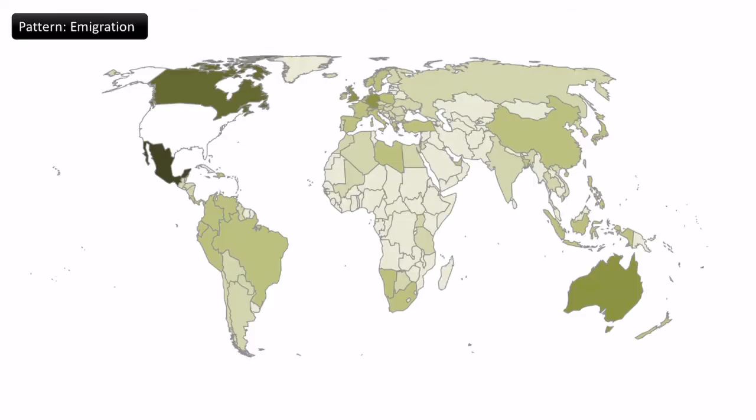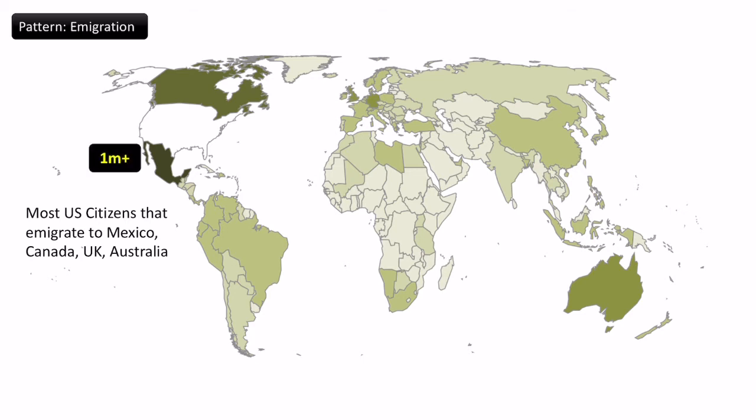In terms of emigration there are some clear patterns. Most US citizens that leave go to Mexico, Canada, the UK and Australia. Canada, UK and Australia are obvious because of their similar languages and economic opportunities. Mexico simply because it's so close — there are over a million US citizens living in Mexico, plus people who may have returned having been born in the USA of Mexican descent.